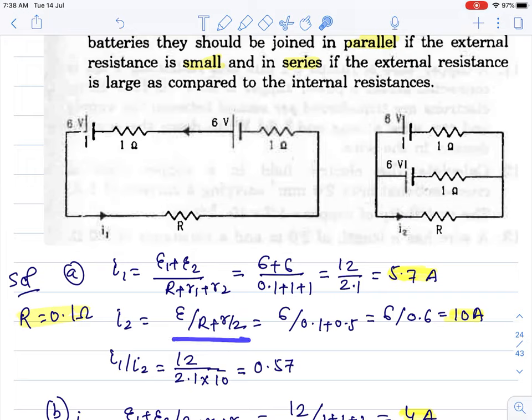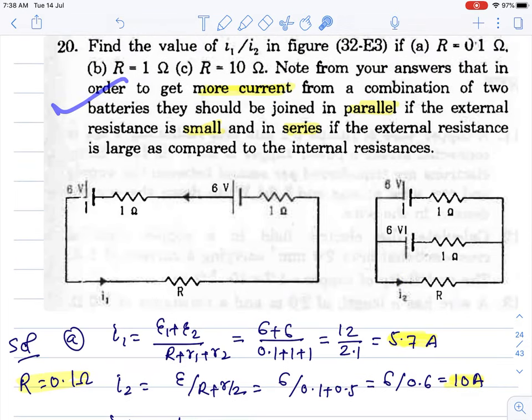When resistance is less, external resistance is 0.1 ohm, we get more current in parallel - 10 ampere here. And here it's 5.7 ampere. That is what they are telling in this second point.